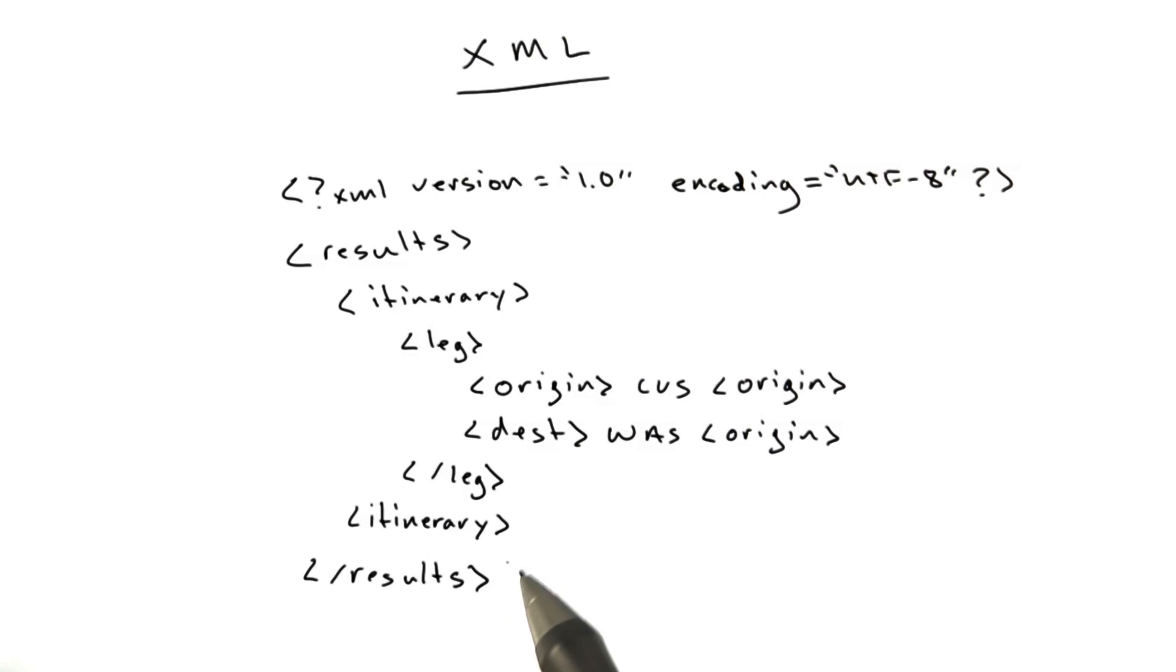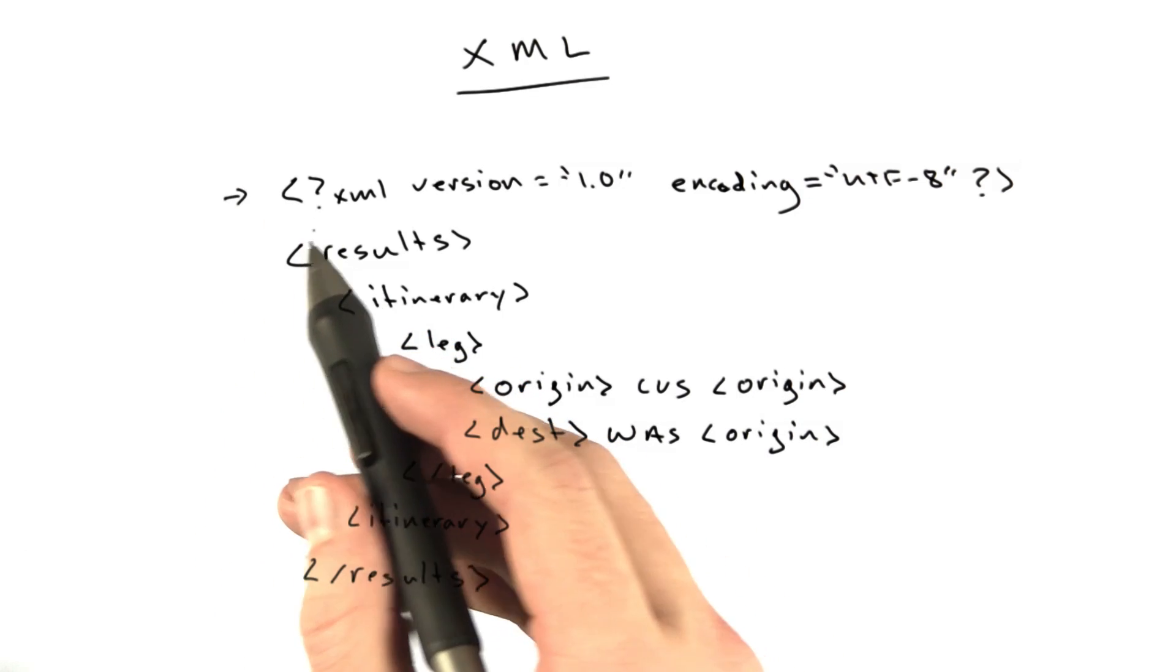So this is what some XML might look like. If you're thinking this looks an awful lot like HTML, you are correct. We have our first line, which is basically the document type. We have the same thing in HTML.